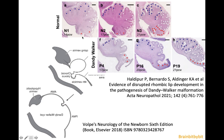They looked at mid-sagittal cerebellar images with the posterior, middle, and anterior lobules marked with blue, white, and red dots, and there was especially a problem with the posterior vermis. Because of the abnormal covering of the anterior membranous area, there's outpouching in the incompletely covered anterior membranous area instead of the posterior membranous area, and then the entire fourth ventricle enlarges. So the cyst you see is actually the enlarged fourth ventricle with imperforated foramen of Magendie and Luschka on both sides.